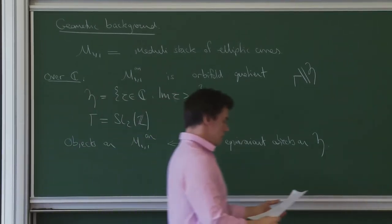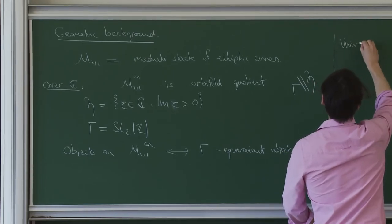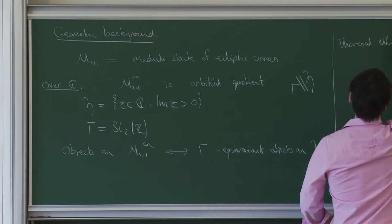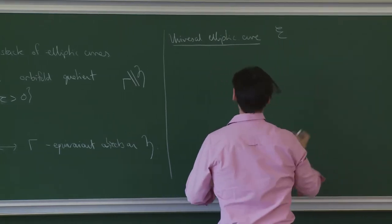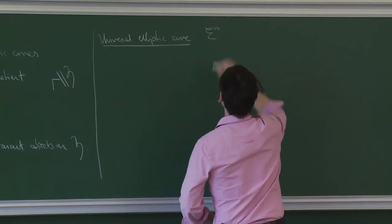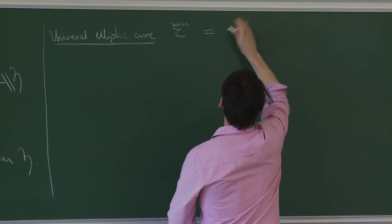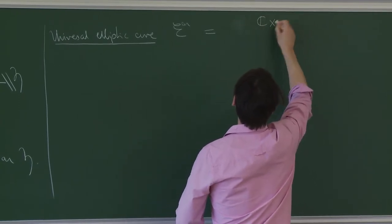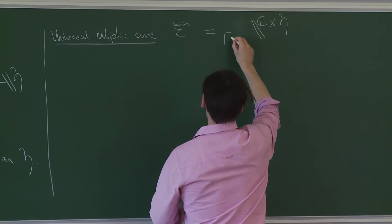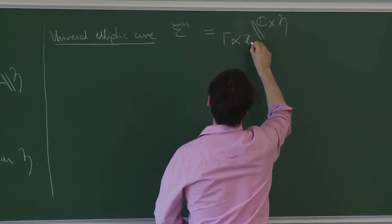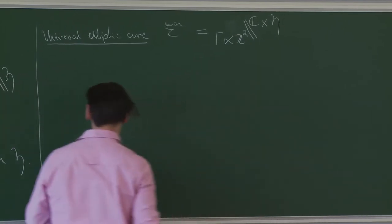Then we have the universal elliptic curve. Really it's the analytic universal elliptic curve and it is described as a quotient, as an orbifold C cross H over gamma semi-direct Z squared. So gamma is going to act on the right on Z squared, and let me give the actions on C cross H.